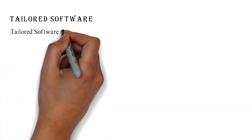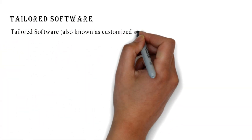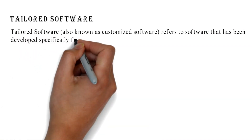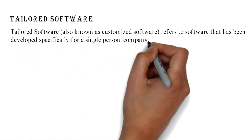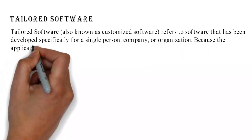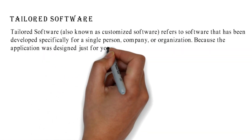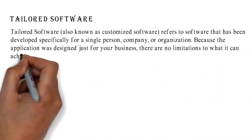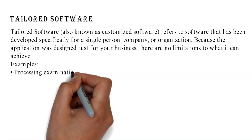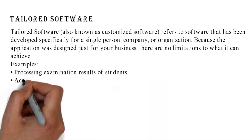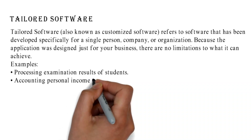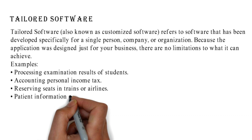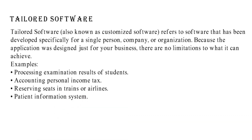Tailored software, also known as customized software, refers to software that has been developed specifically for a single person, company, or organization. Because the application was designed just for your business, there are no limitations to what it can achieve. Examples include processing examination results of students, accounting for personal income tax, reserving seats in trains or airlines, and patient information systems.